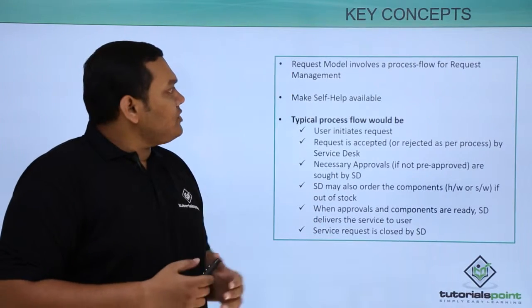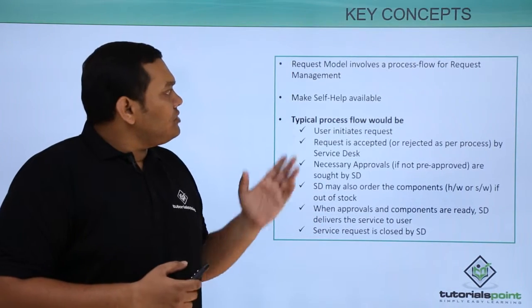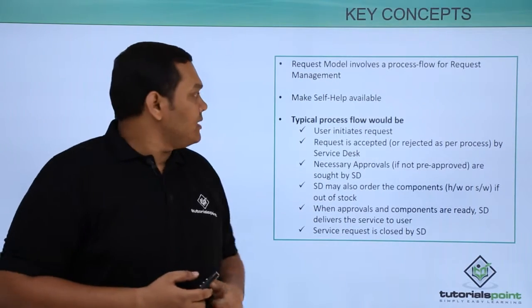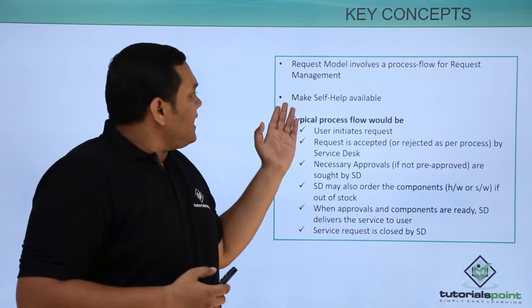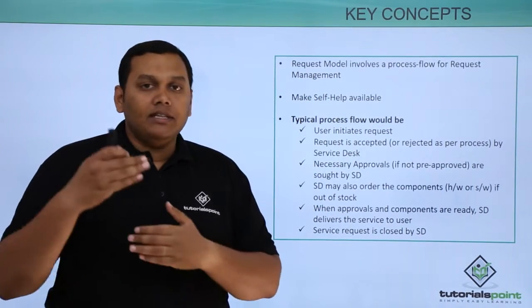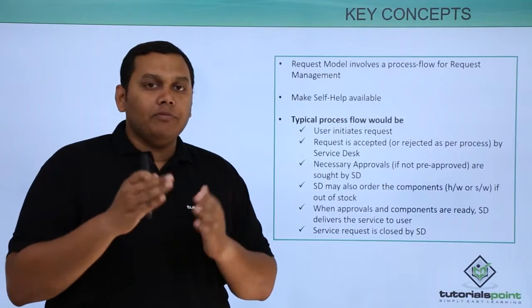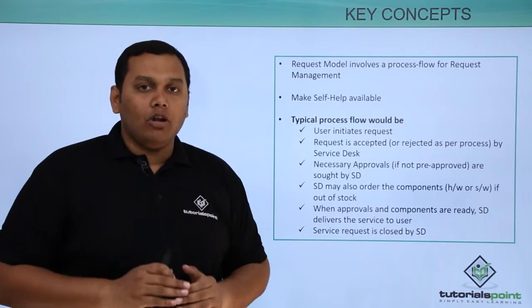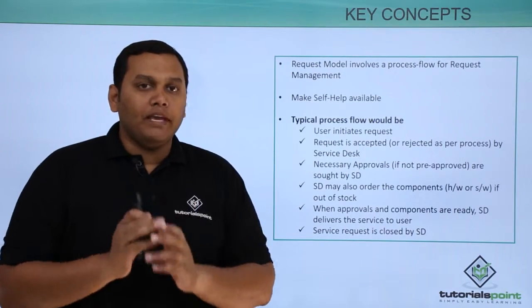Coming to the request model, which involves the process flow for request management. Self-help is made available, meaning in the request fulfillment page there will be a help column or help page so that self-help is always available.